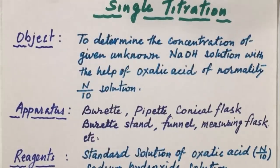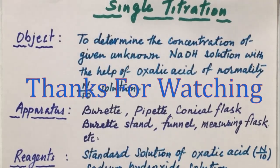Today we have studied how to determine the concentration of given unknown NaOH solution with the help of oxalic acid solution of known normality. We have performed the experiment, recorded readings, and found the result. At last, we have discussed essential precautions. If you found this video helpful, please like, subscribe, and share the help of our channel. Thank you.